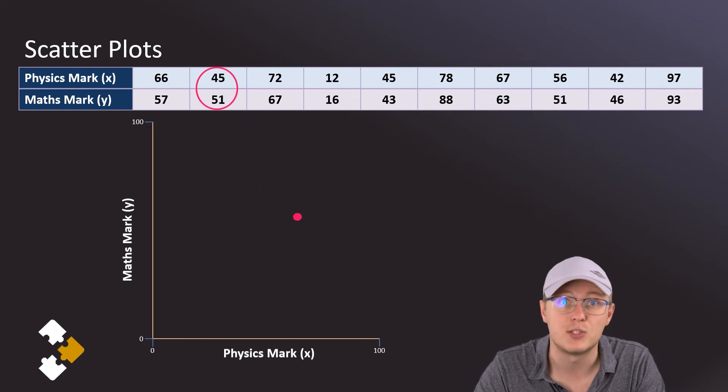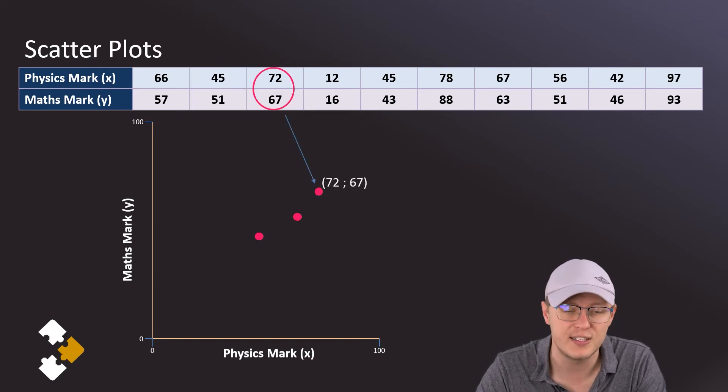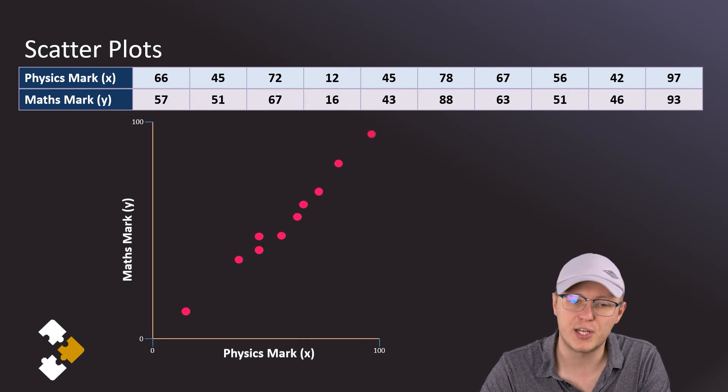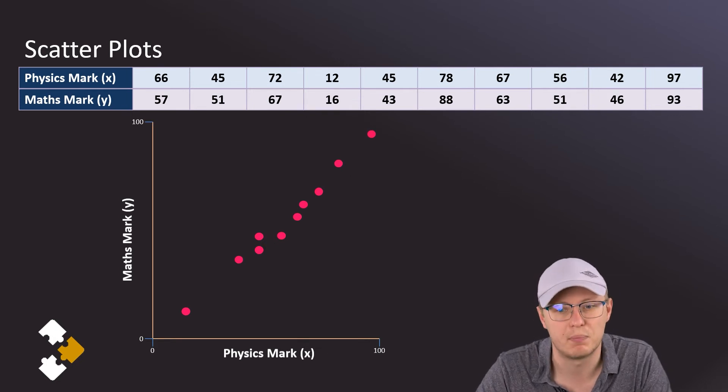To plot the next point, we'll do the same: x value of 45 and y value of 51. Then we're going to continue that process for each and every one of our data points, and when we do that, a picture will usually start to appear.